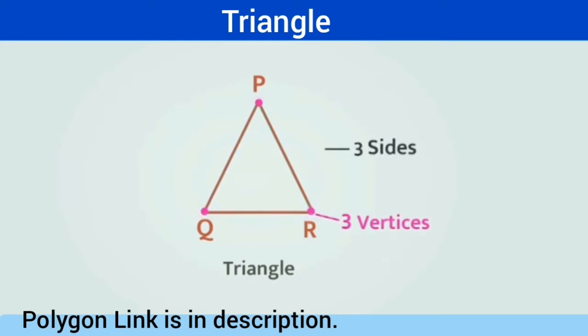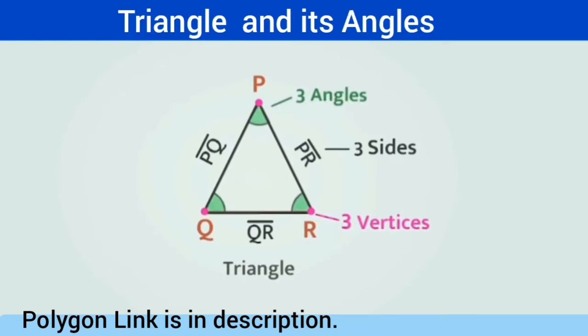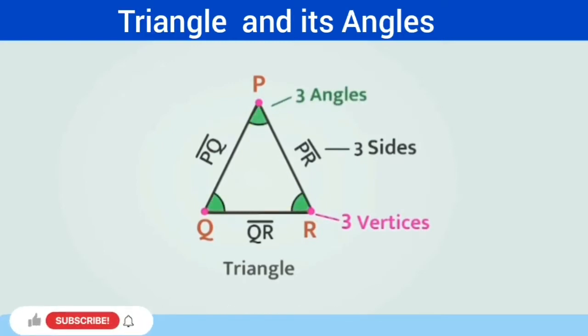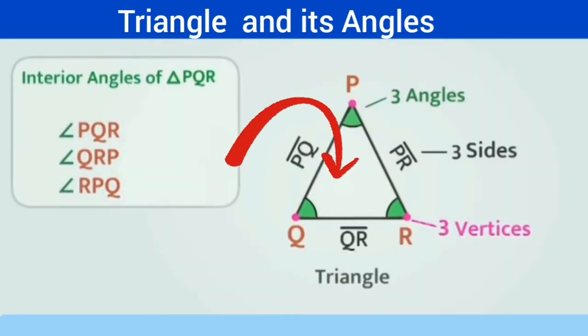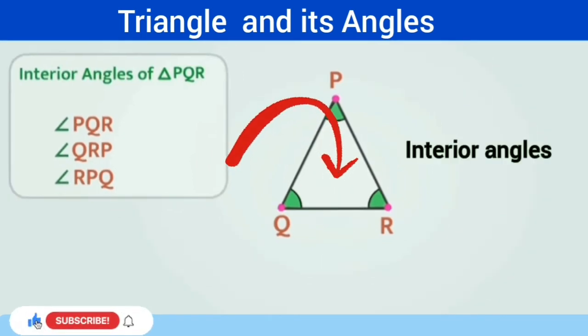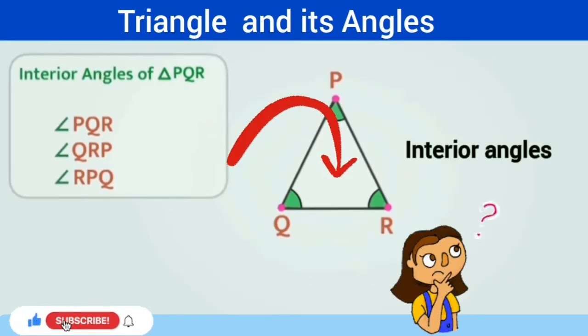The three angles of triangle PQR are angle PQR, angle QRP, and angle RPQ. Since they are on the inner side of the triangle, these angles are called interior angles of a triangle.